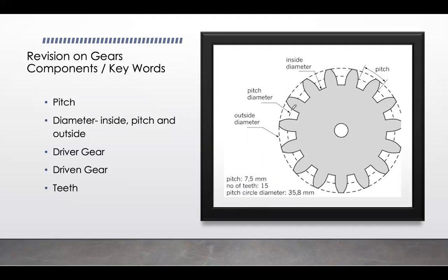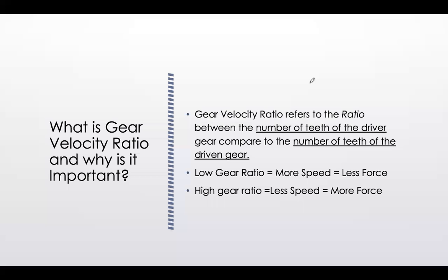On our gears we have the pitch diameter — the inner measurement — and the outer diameter between the teeth. The pitch is measured from the start of one gear tooth to the next. We also distinguish between the driver gear, which puts in the force, and the driven gear, which is driven by it — without the driver, nothing will happen.